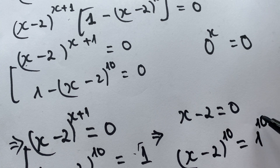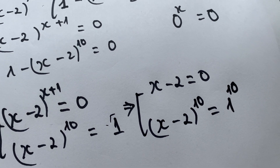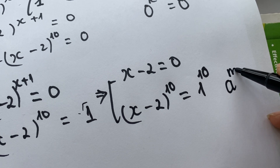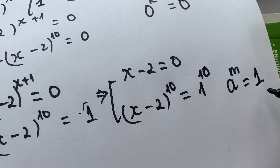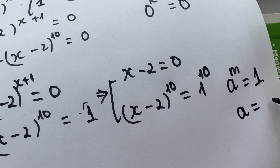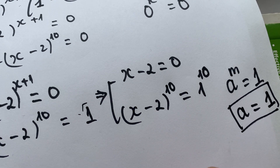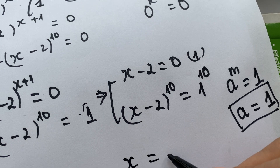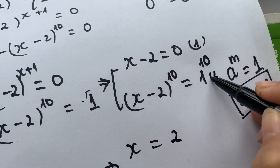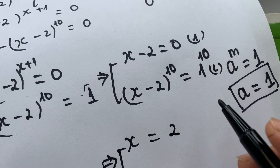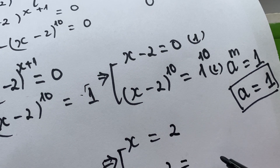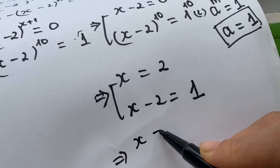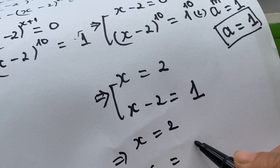In the exponential rule, a to the power m equals 1 means a to the power 1. So with this rule, x minus 2 equals 1, and therefore x equals 3. So we get x equals 2 or x equals 3.